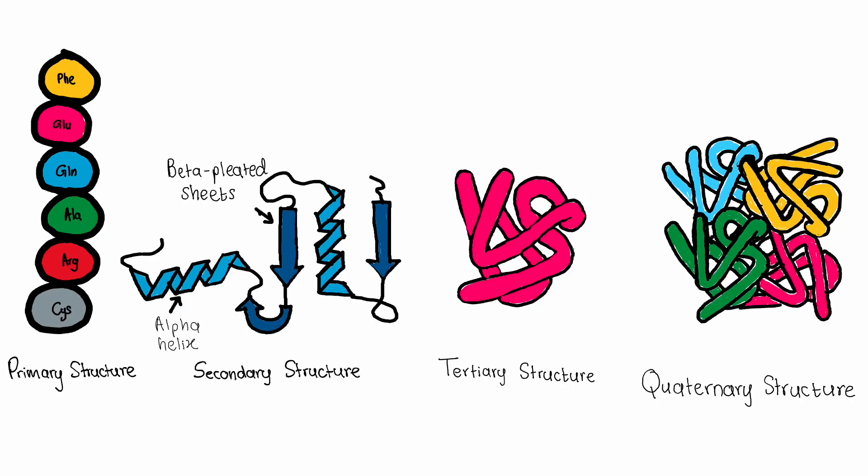Proteins are complex macromolecules made up of amino acids. Their structure can be described at different levels. The different levels include the primary, secondary, tertiary, and quaternary structures. Let's consider each in more detail.